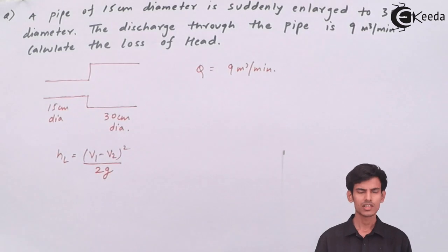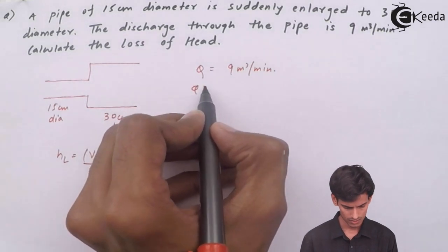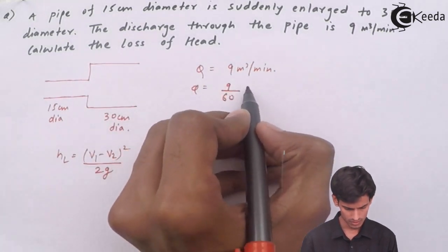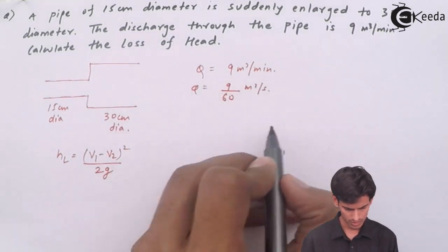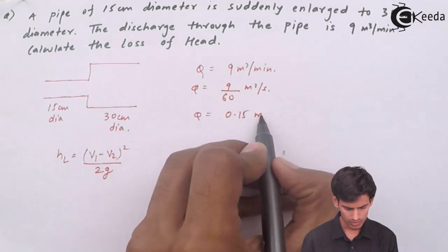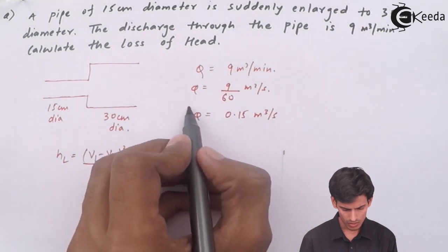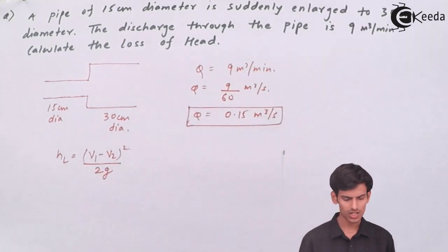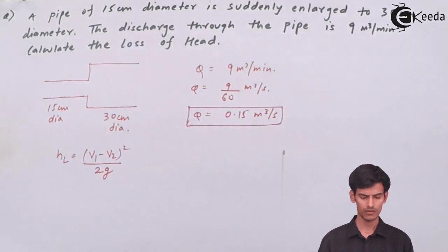The discharge is given in meter cube per minute. Since we should have discharge in SI units, let's convert to meter cube per second. So the discharge is 0.15 meter cube per second. Now since we know the discharge, you can get the value of v1 and v2 very easily.